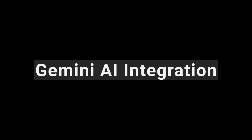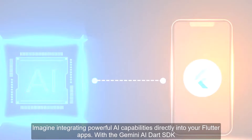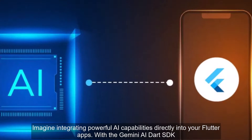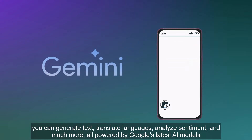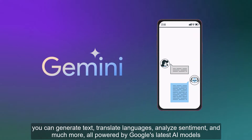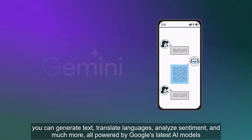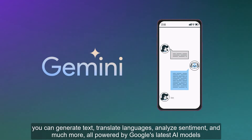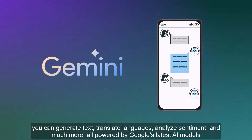Gemini AI Integration: Imagine integrating powerful AI capabilities directly into your Flutter apps. With the Gemini AI Dart SDK, you can generate text, translate languages, analyze sentiment, and much more, all powered by Google's latest AI models.